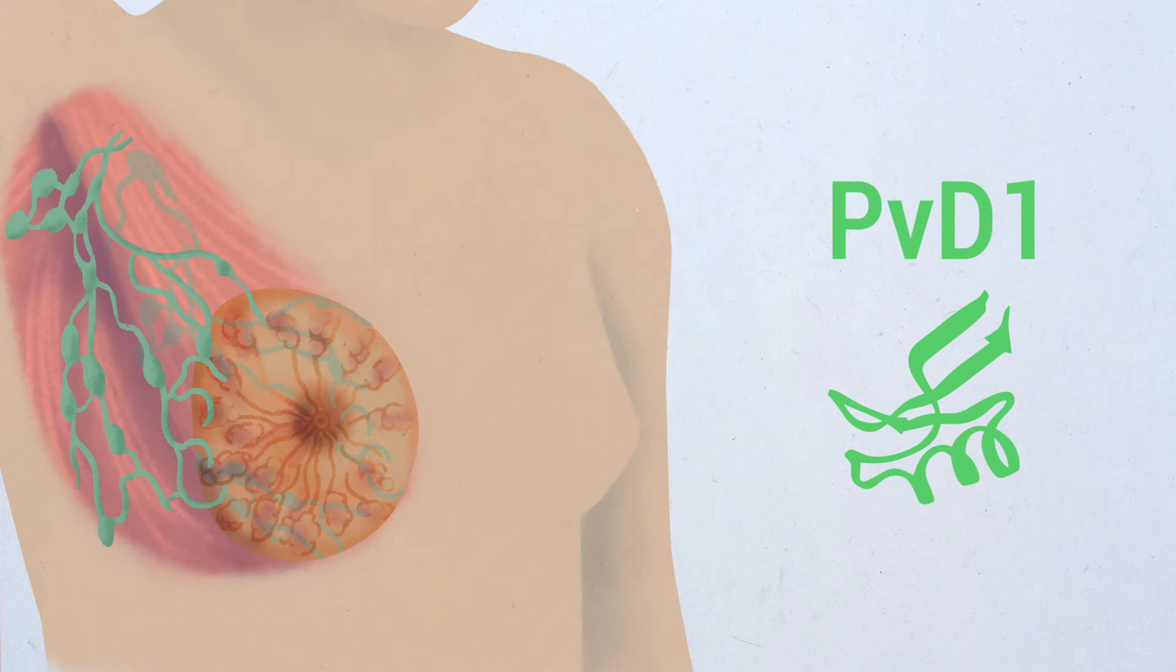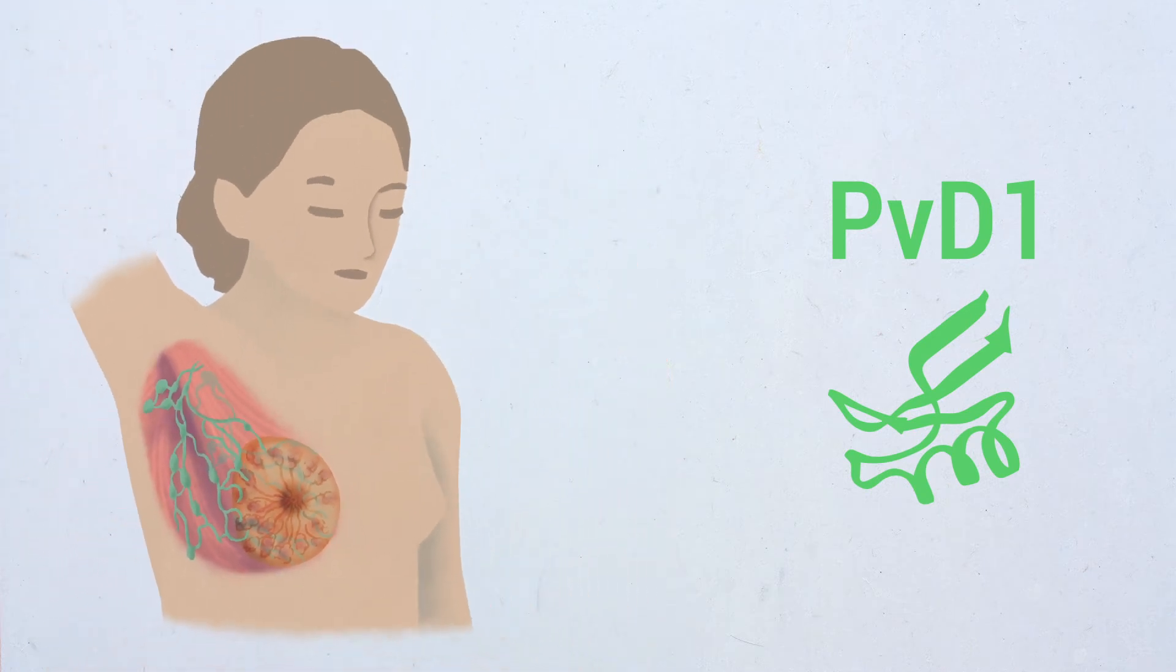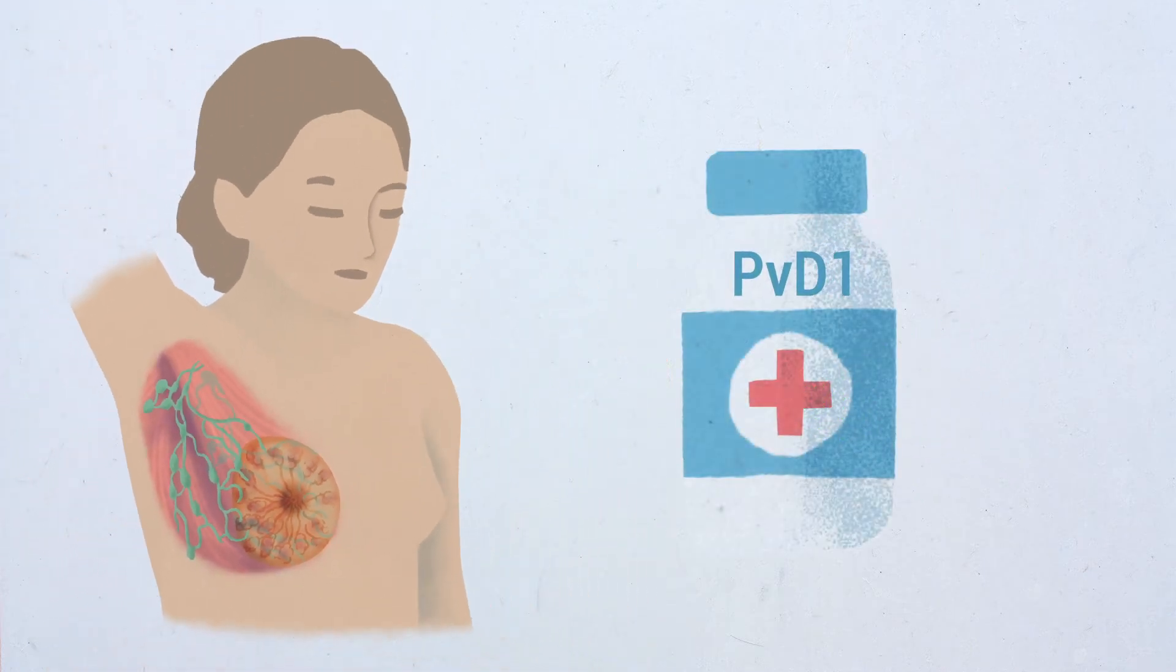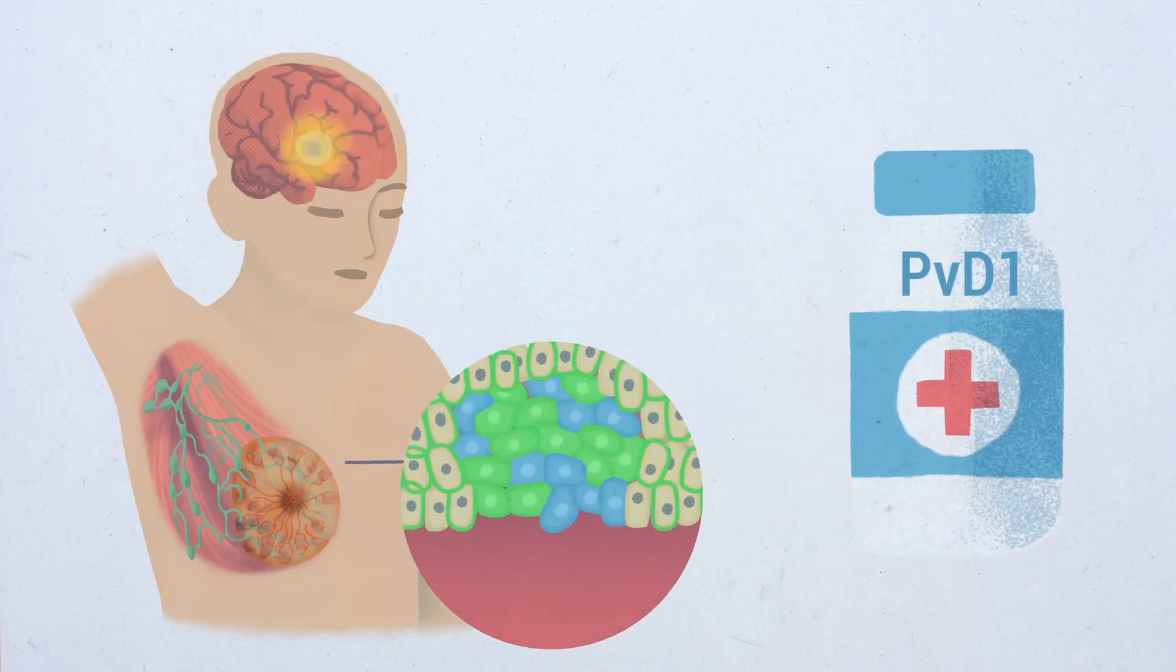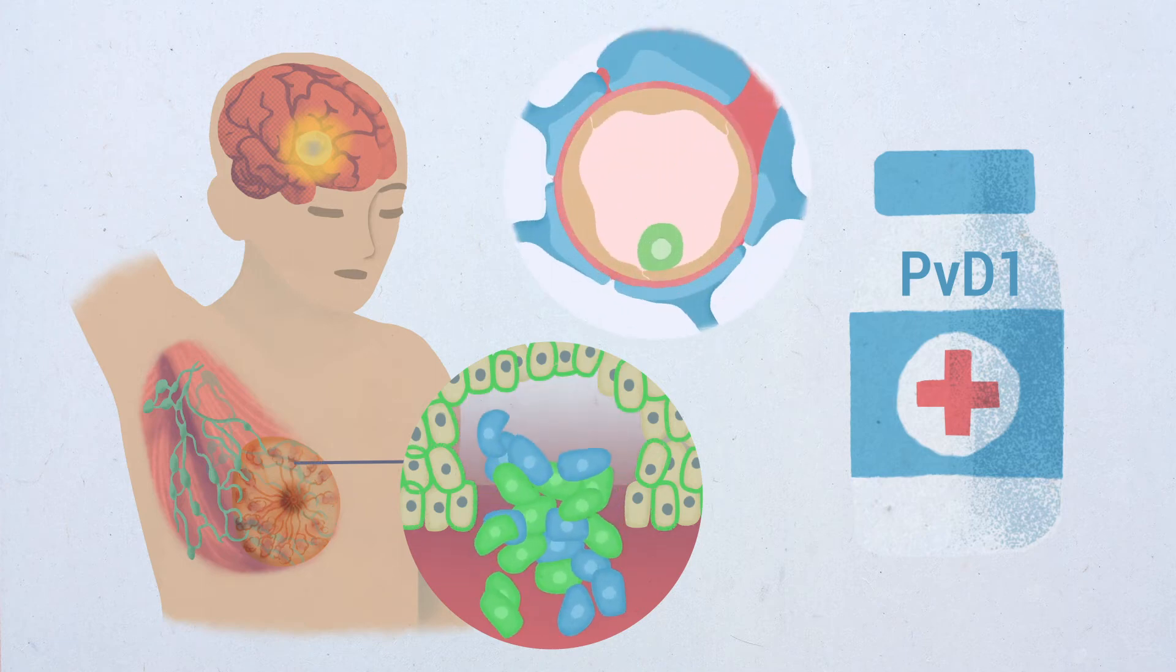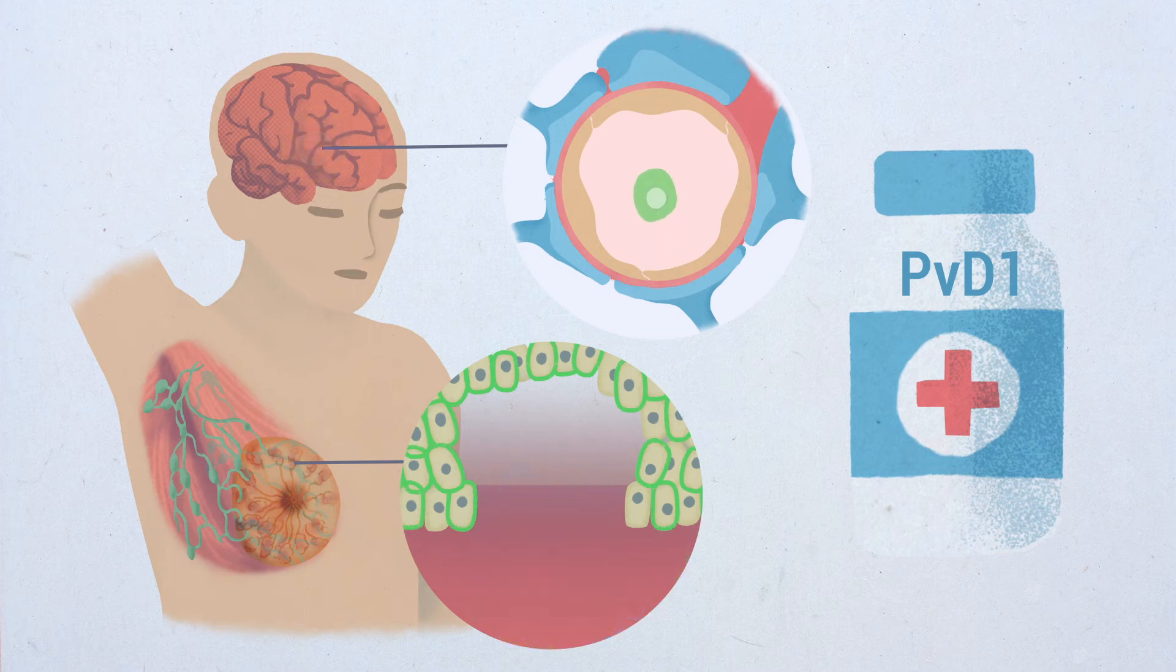Taken together, our results show that PVD1 is a potential template for the design of innovative pharmacological approaches for metastatic breast cancer treatment. The manipulation of the biomechanical properties of tumor cells that ultimately kill the tumor and prevent malignant cells to attach to the blood-brain barrier.